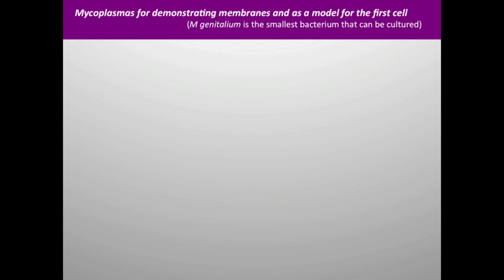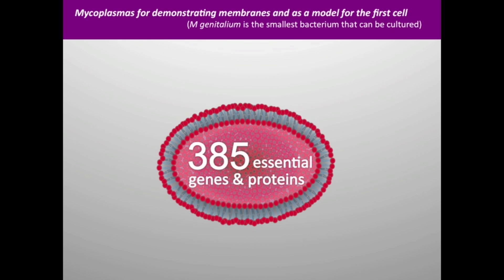The smallest bacterium that can be grown in the laboratory is Mycoplasma genitalium. We can use this bacterium as a model for what the first cell might have been like. They found that this bacterium has 385 essential genes — essential meaning if any one of these genes is knocked out, the bacterium cannot reproduce. In bacteria, almost all genes are transcribed and translated into proteins. So the first cell, as it formed, would have needed close to 385 genes capable of producing 385 proteins.